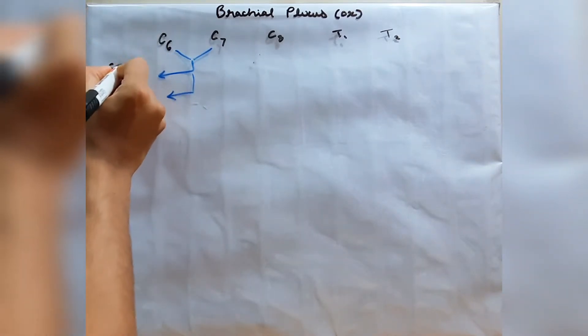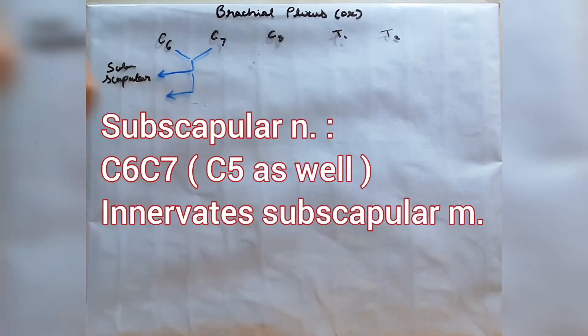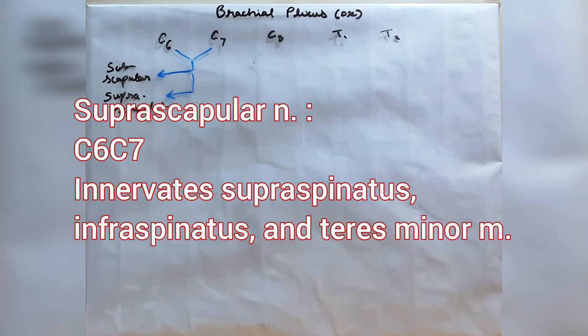First we will start with C6 and C7, which form two nerves. The first is the subscapular nerve, which provides innervation to the subscapular muscle. The second is the suprascapular nerve, which provides innervation to the supraspinatus, infraspinatus, and teres minor muscles.